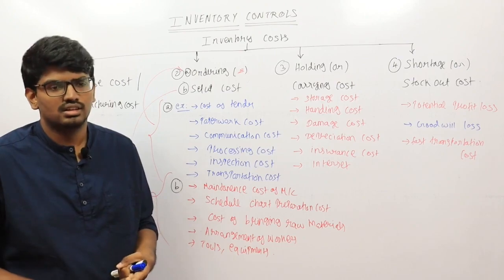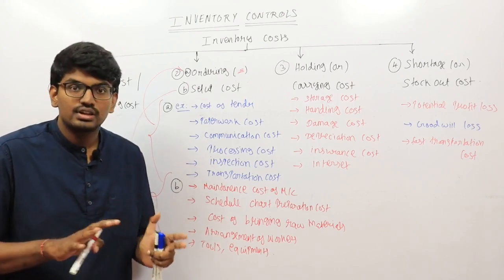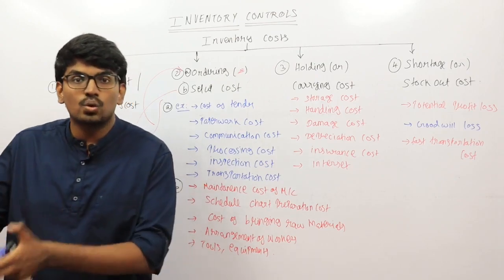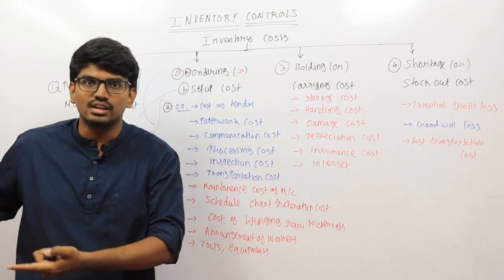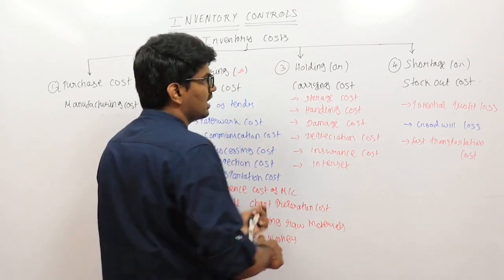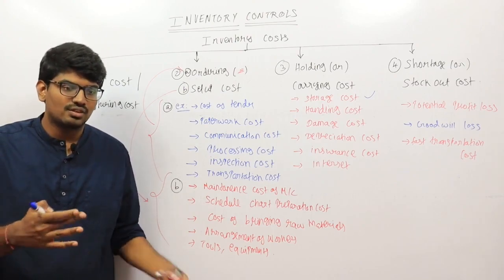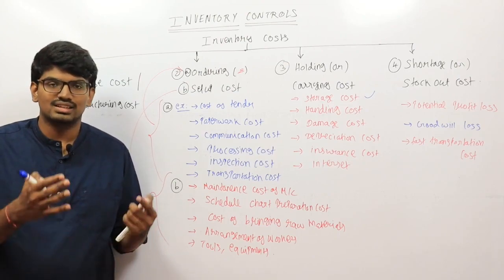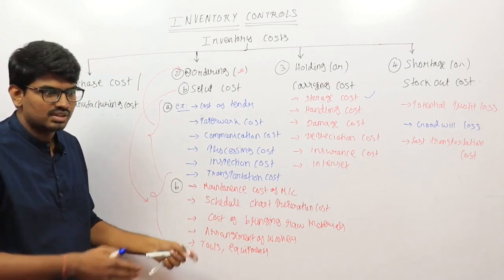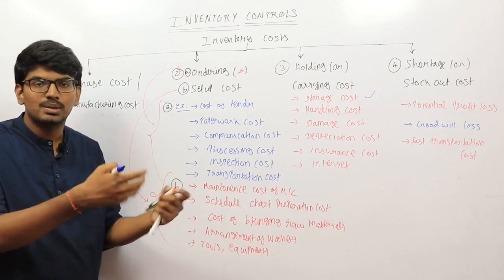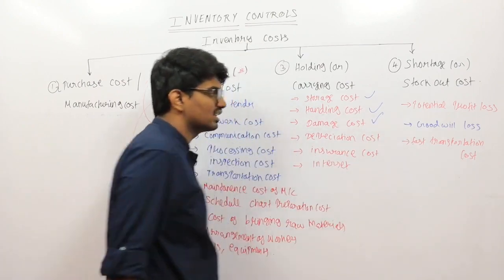Whether you take the purchase model or manufacturing model, once you have the finished goods, semi-finished goods, or whatever goods — and you are going to store them — the cost associated with storing is holding or carrying cost. This includes: storage cost, handling cost — you need a particular team for handling goods and bringing them from one place to another; and damage cost — there is a possibility for the product to get damaged during transport from the manufactured area to inventory storage.